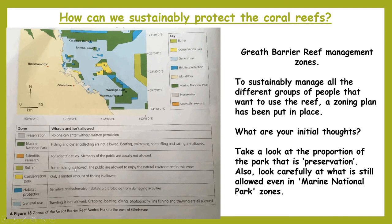In the conservation park yellow area, only a limited amount of fishing is allowed — so there are positives in starting to control overfishing. The blue general use area does not allow trawling, though crabbing, boating, diving, photography, and line fishing are allowed. What's a bit depressing is that the biggest area of the ocean use zoning is still general use. In the dark blue habitat protection zones, sensitive and vulnerable habitats are protected from damaging activities — virtually no fishing or tourism is allowed there, which is positive. So how effective is this strategy really going to be?